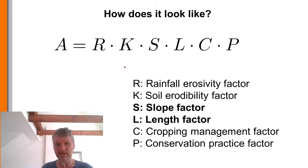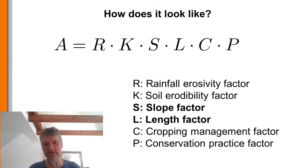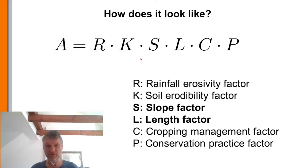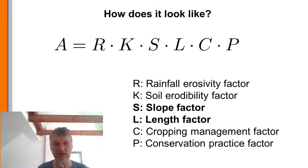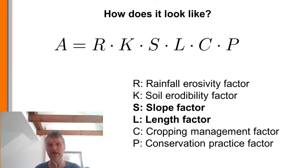The second factor is the soil itself, described by the soil erodibility factor K. The soil erodibility factor describes only the soil itself: what kind of material it is, what kind of soil it is, what kind of sediment size distribution it has, and so on.